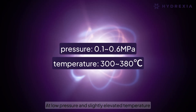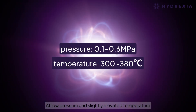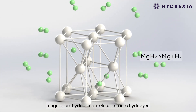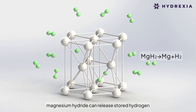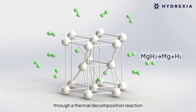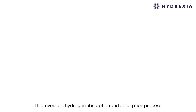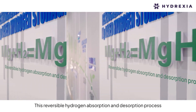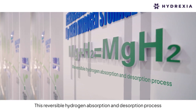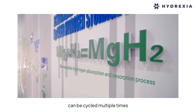At low pressure and slightly elevated temperature, magnesium hydride can release stored hydrogen through a thermal decomposition reaction. This reversible hydrogen absorption and desorption process can be